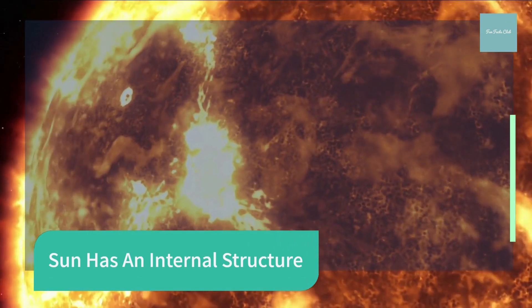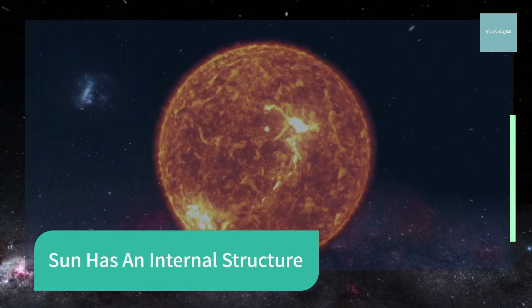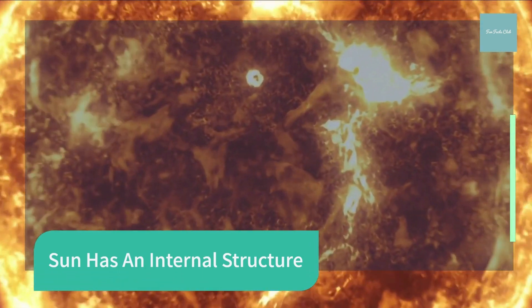Photons created in the core get bounced around in the radiative zones so often that on average, it takes them about a million years to reach the surface.